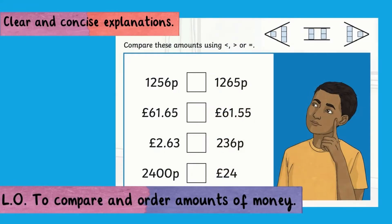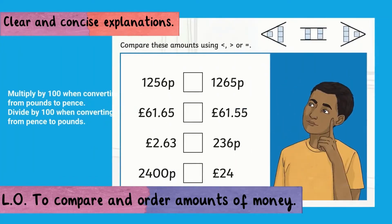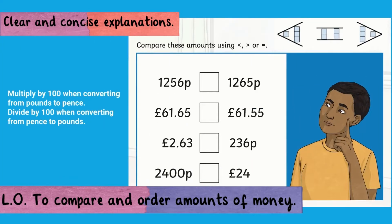Using the inequality symbols, you will need to compare these amounts on screen. Remember, when converting from pounds to pence, you will times by 100, as 100 pence equals 1 pound.